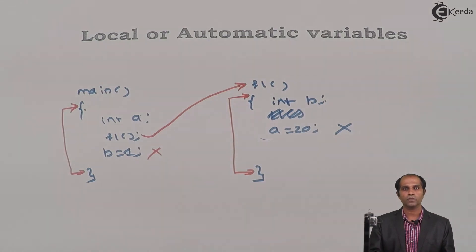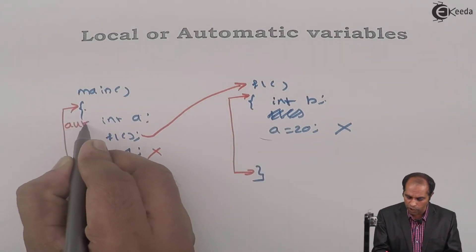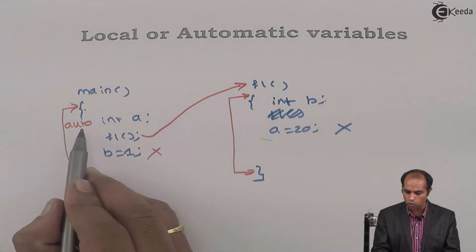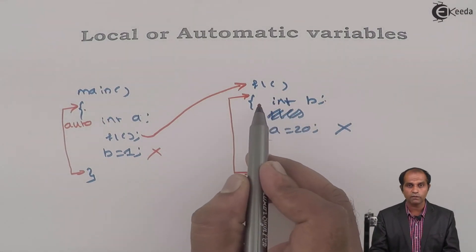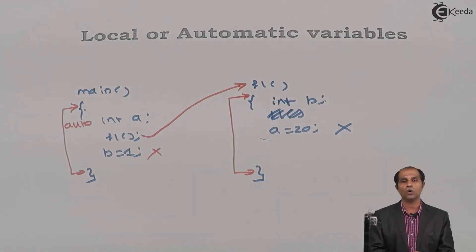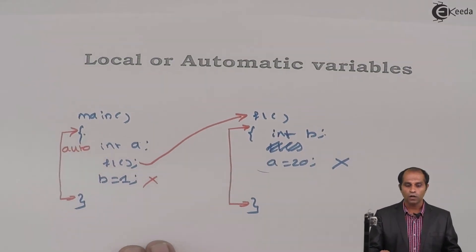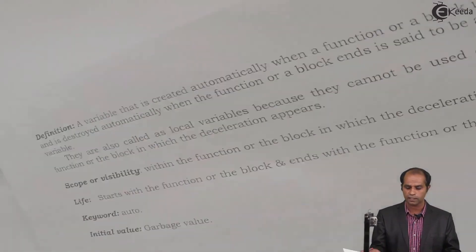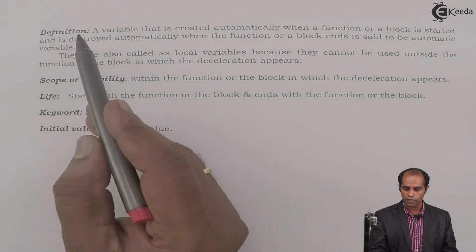By default, every variable is auto if no storage class is specified. You can explicitly declare a variable as auto int a, or simply int b — even without the auto keyword, it defaults to auto. The keyword is auto and the initial value is garbage value. These are the five terms: definition, scope or visibility, life, keyword, and initial value.